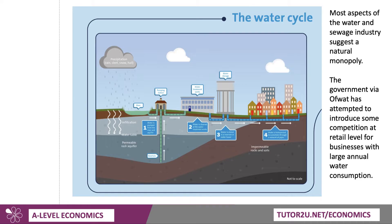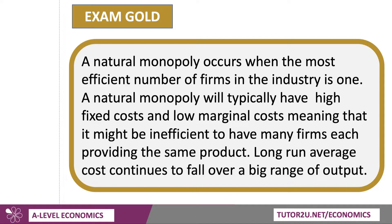Most aspects of this industry suggest a natural monopoly, which involves one firm. But the government, via Ofwat — remember Ofwat is the regulator — has attempted to induce some competition at retail level, not for you and I, but for businesses with very large annual water consumption. A natural monopoly occurs when the most efficient number of firms in the industry is one, typically with very high fixed costs and low marginal costs, so the long-run average cost falls over a large range of output.